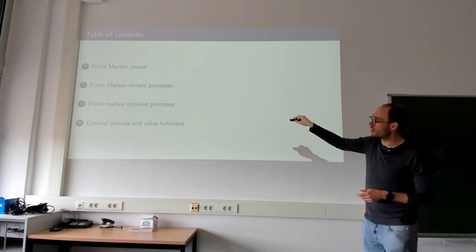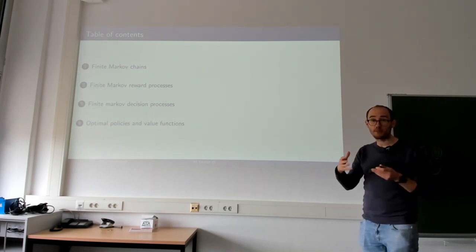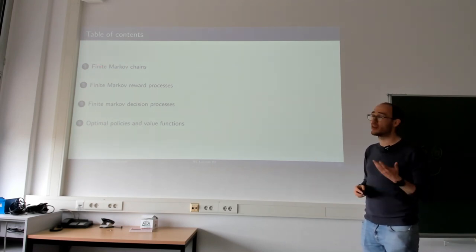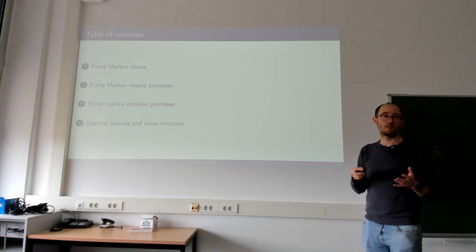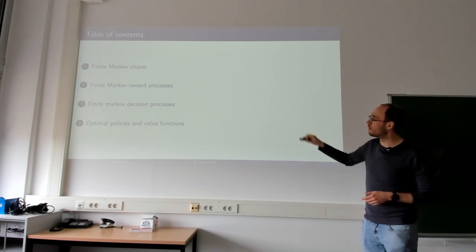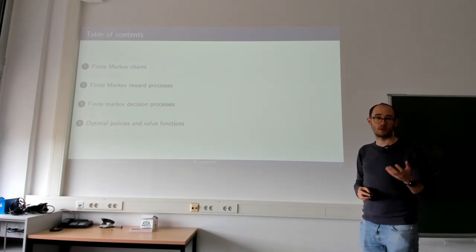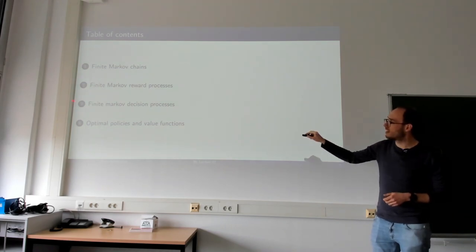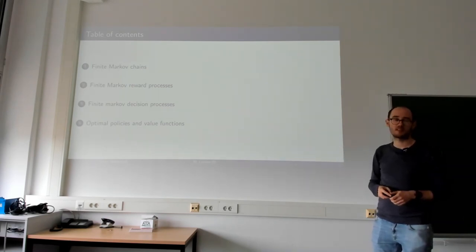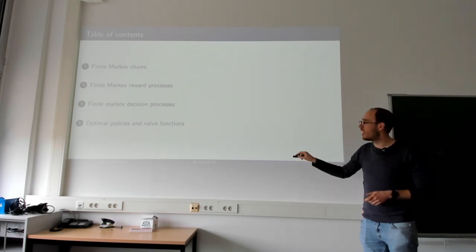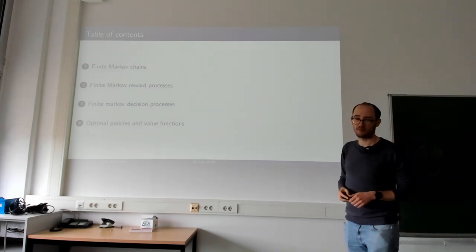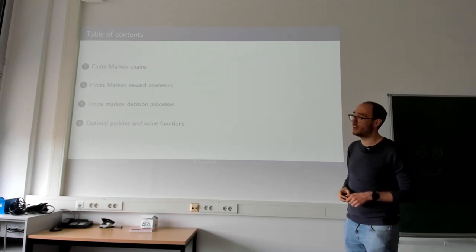With each subsection we'll add a little more to our problem description. We start with Markov chains, which are autonomous stochastic processes without any opportunity to manipulate them. Then Markov reward processes, where we describe optimality through rewards. Then finite Markov decision processes, which add the opportunity for actions. Finally, based on MDPs, we'll discuss optimal policies and value functions.